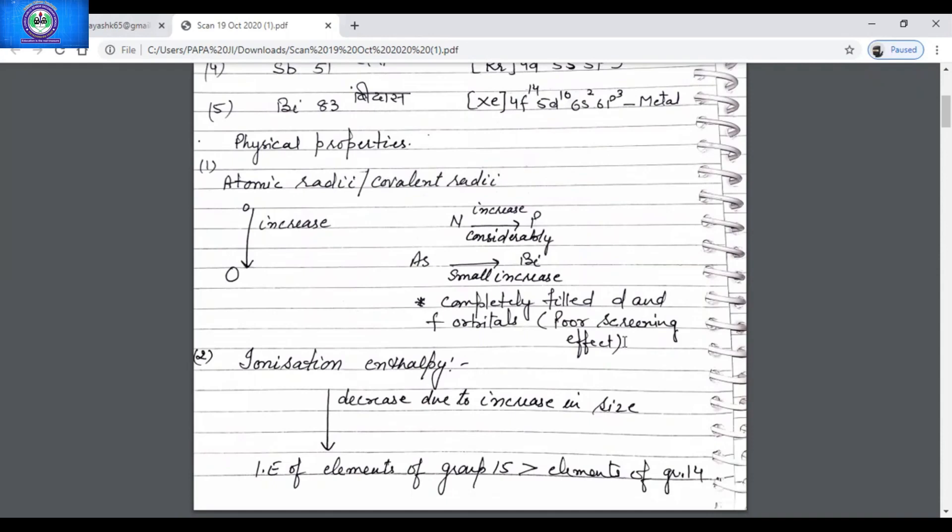But the difference in the first ionization enthalpy value of the elements in group 15 and group 14 is very large. This is because of the fact that the electronic configuration of elements of group 15 is half filled and is more symmetrical.